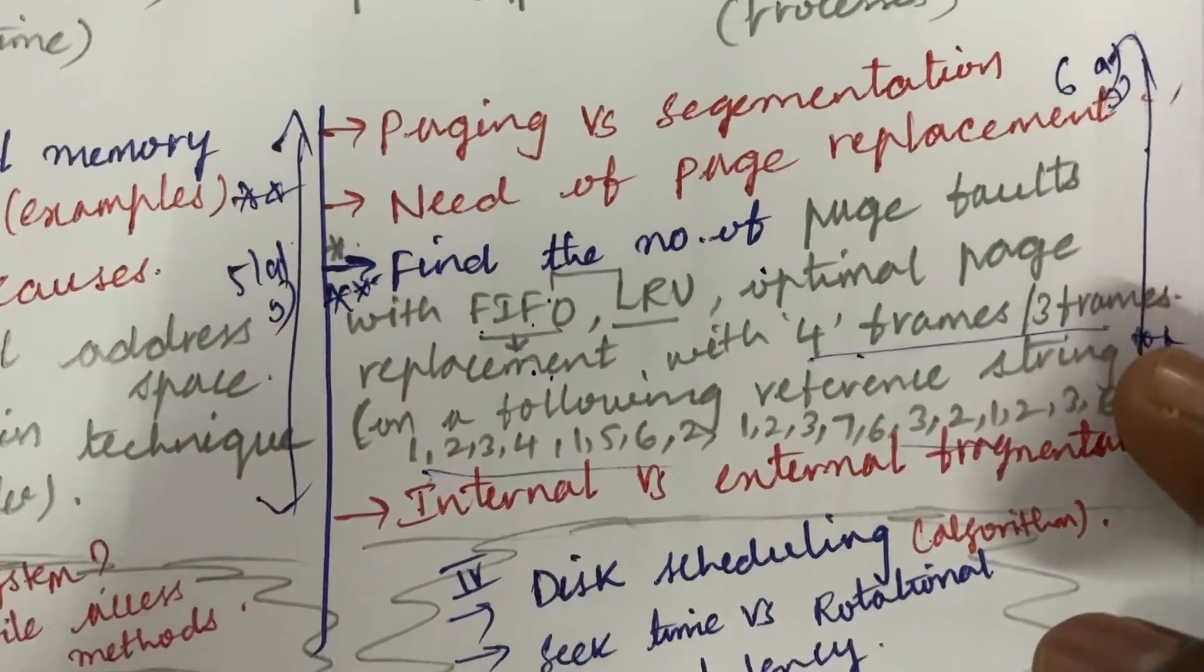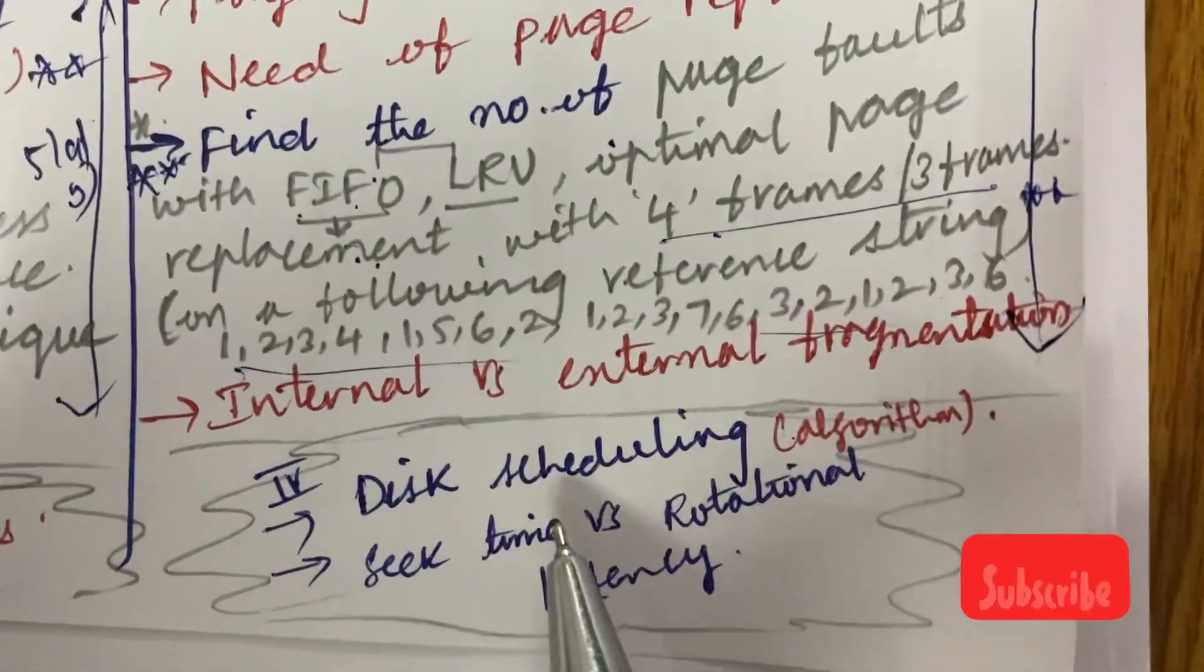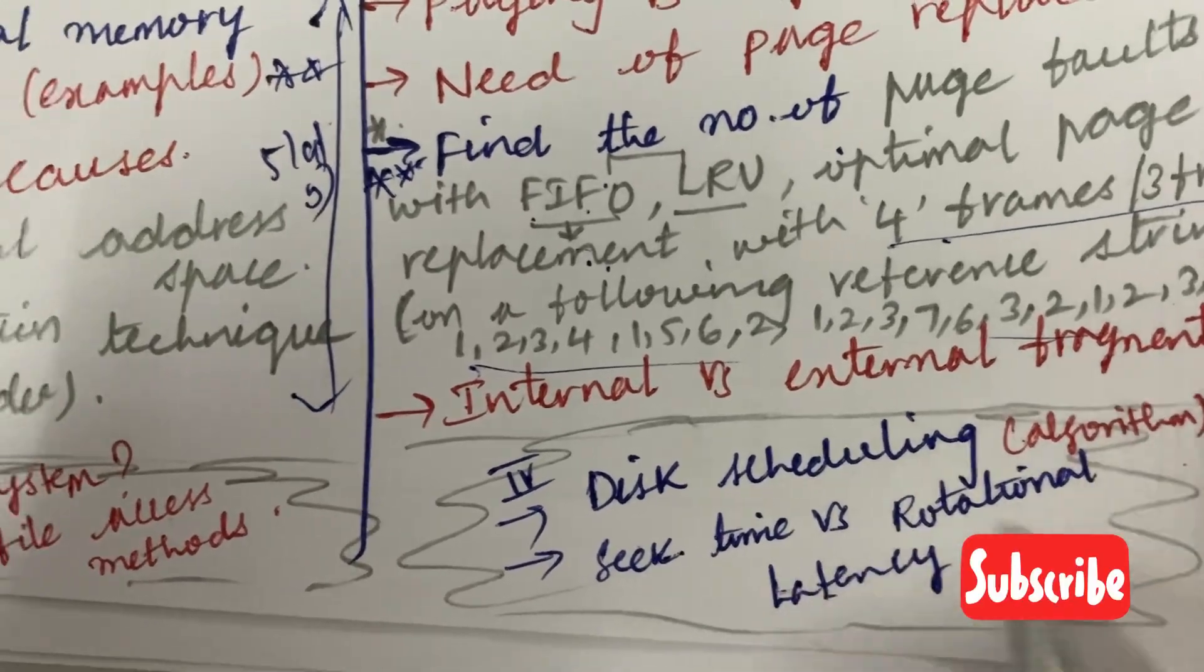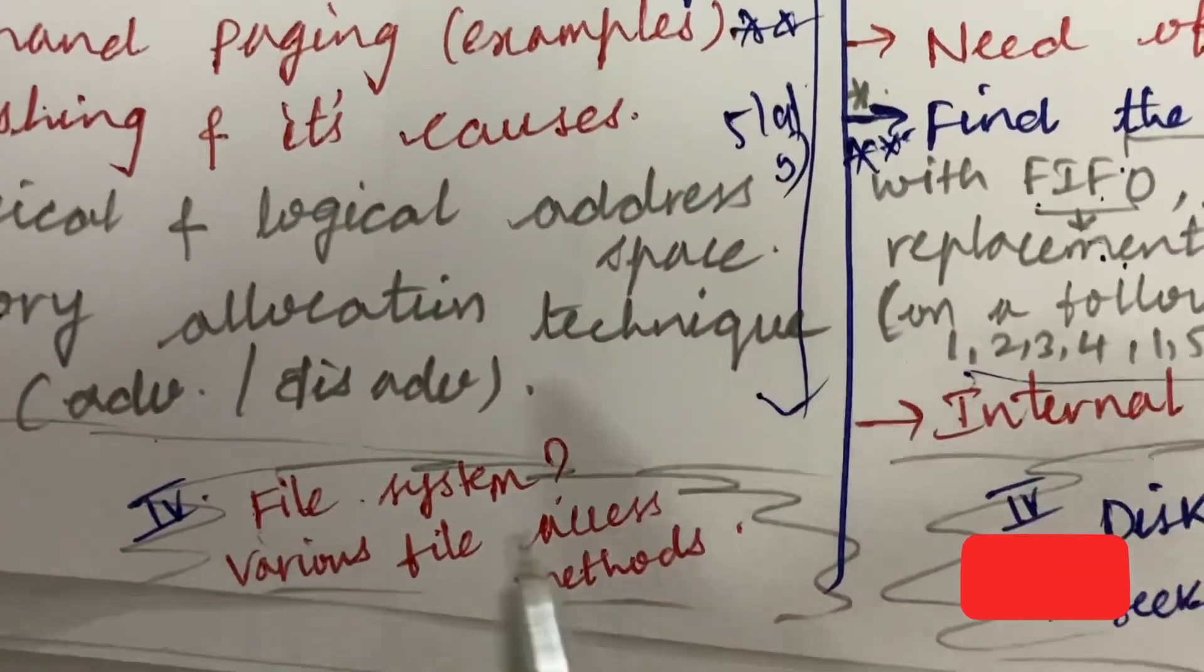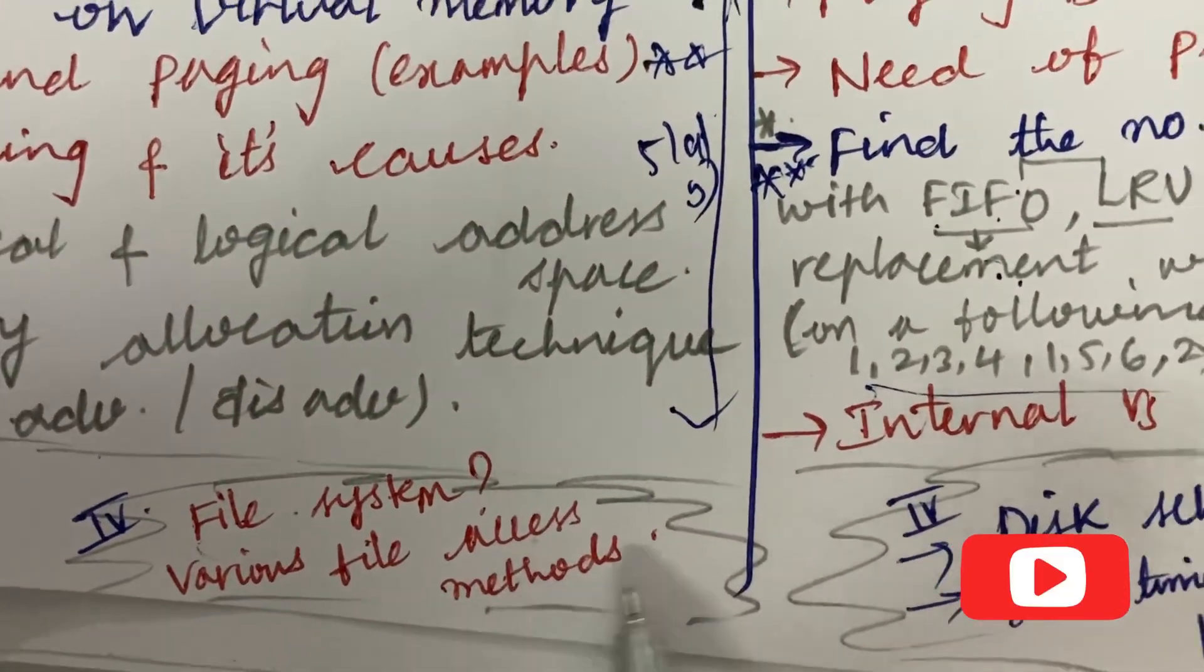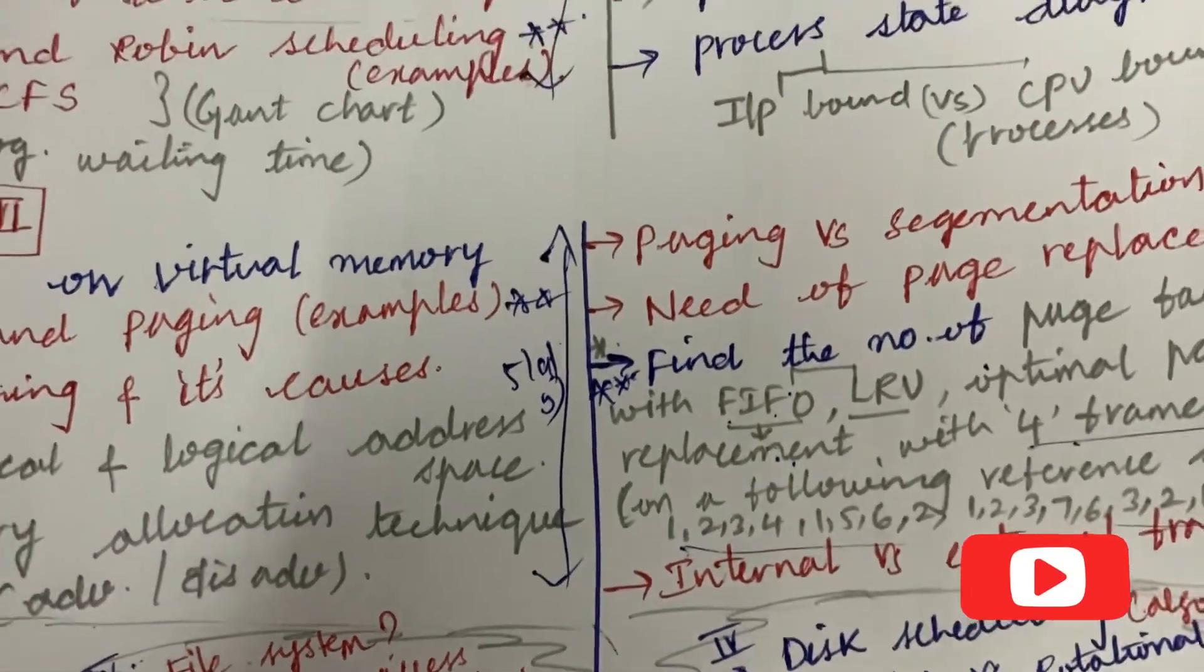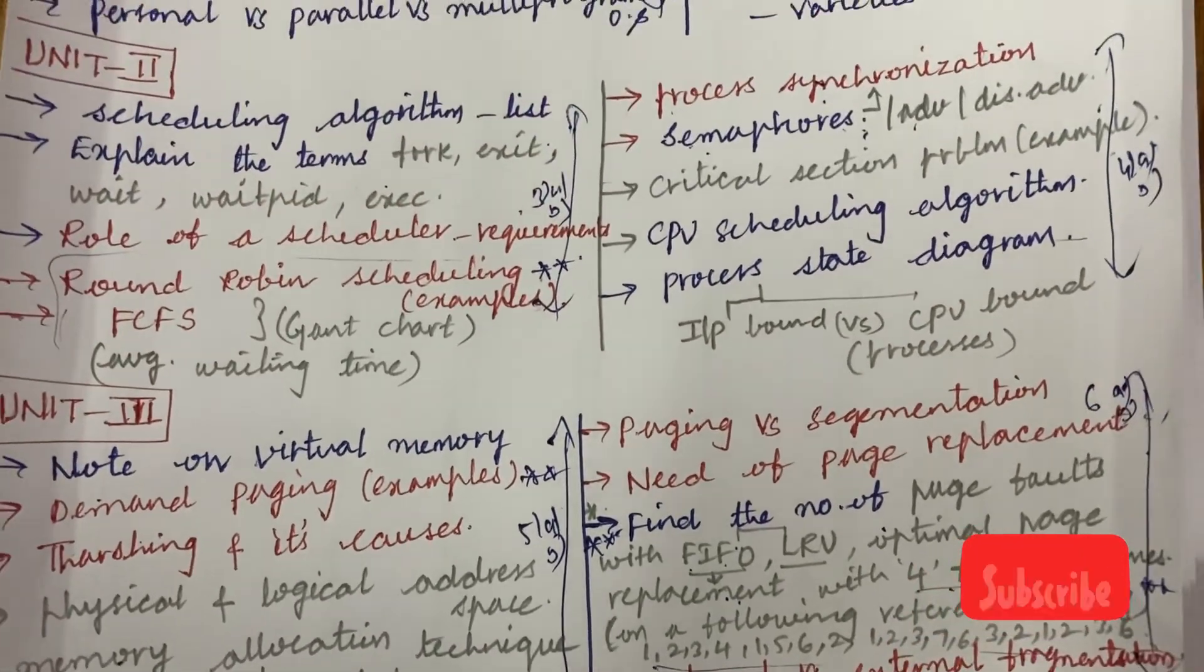I'm giving you certain important questions only. In the fourth unit, the seventh question is all about the disk scheduling and its algorithm and seek time versus rotational latency, as well as the file system and the various file access methods. You can work out these to get the seventh question.